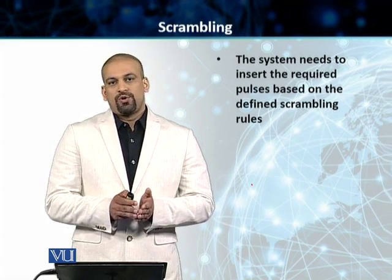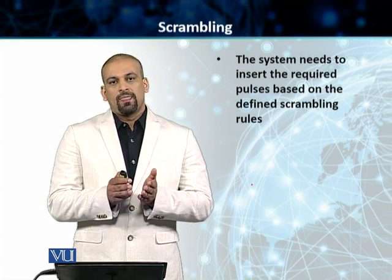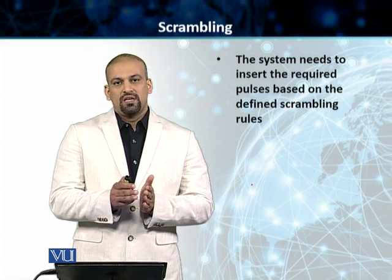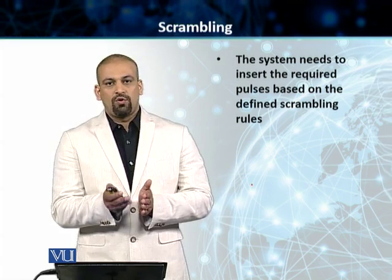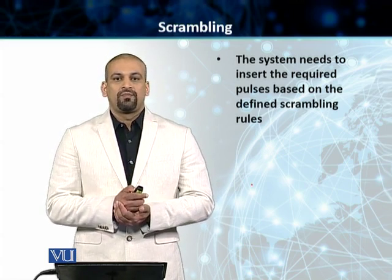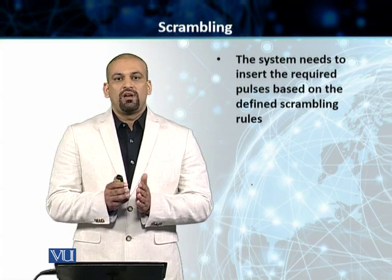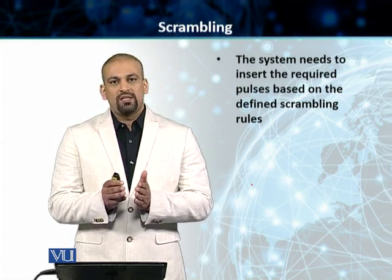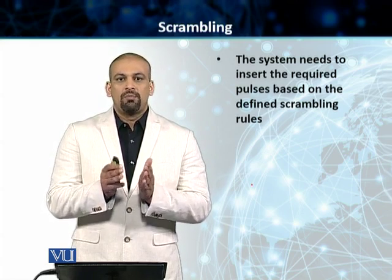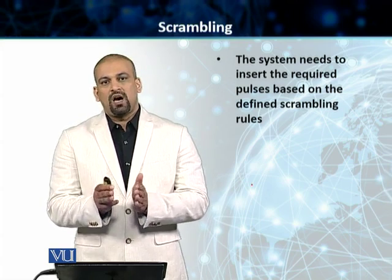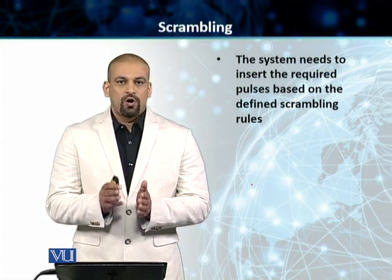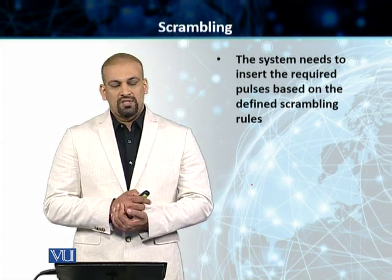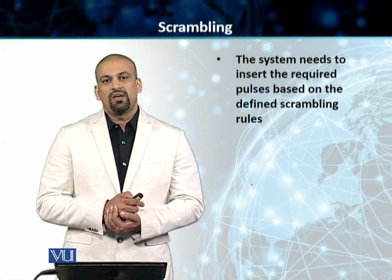In the scrambling process, instead of increasing the data rate like in 4B5B where we added extra redundant bits and increased the data rate and required bandwidth, in scrambling we will insert some extra pulses. But in this particular case, the number of pulses is going to be exactly equal to the number of bits that those pulses are replacing. So we are not messing around with the bandwidth that is required.